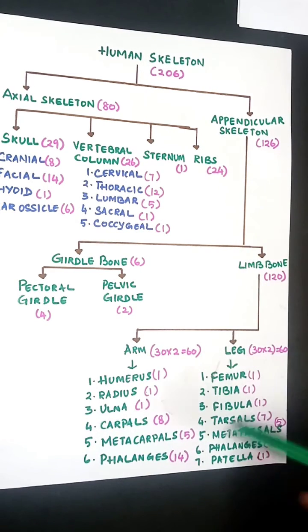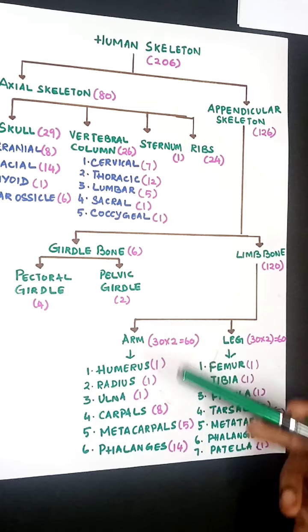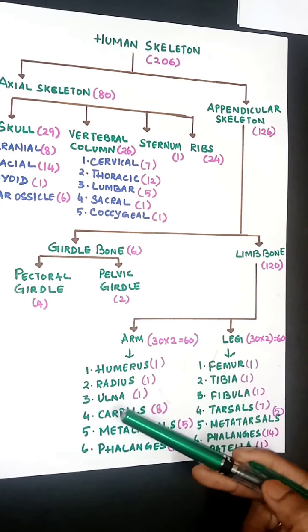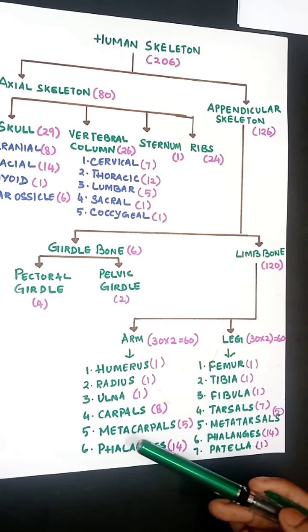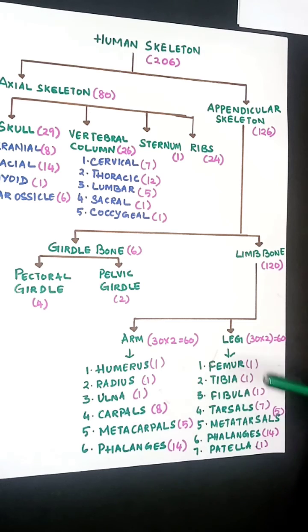Under arm bones, you have humerus 1, radius 1, ulna 1, carpals 8, metacarpals 5, and phalanges 14. This is on one side, so multiplied by 2 forms 60 bones total for the arms.